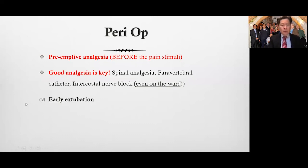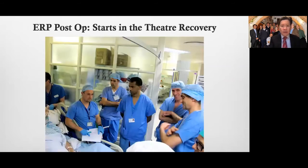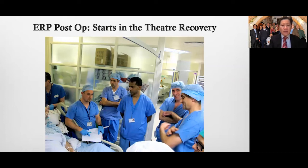Another key to enhanced recovery is early extubation, early post-op mobilization, and early introduction of oral fluid and diet. Your post-op enhanced recovery program starts in the theater recovery — not in high dependency, not in intensive care. We start in the theater recovery when they're out. We get the patient's pain under control, get them coughing in three successive coughs to clear secretions, and get them moving their legs and exercising.